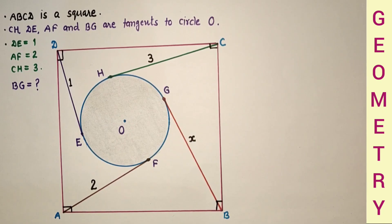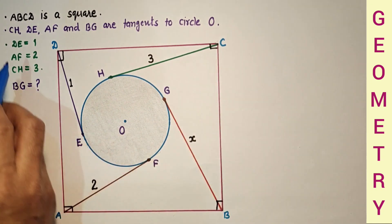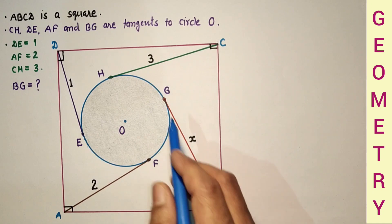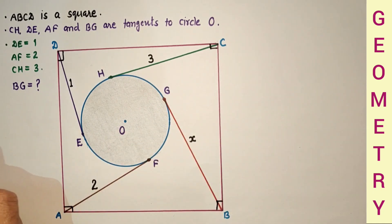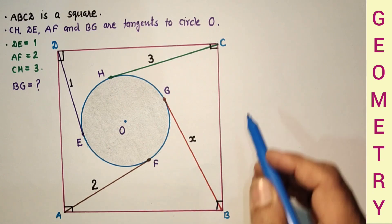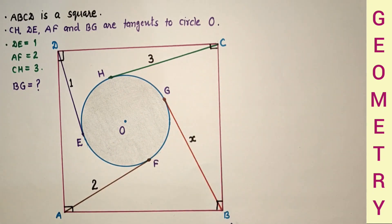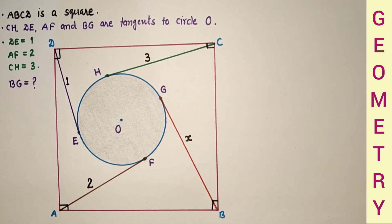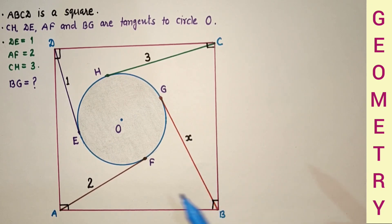Hello everyone, welcome to my channel. Today we will discuss this question. We are given ABCDEJ square, and CH, DE, AF and BG are tangents which touch the circle. The lengths of these three tangents are given: DE is 1 unit, AF is 2 units, CH is 3 units. We have to find the length of the fourth tangent BG. Let us suppose BG is X. We have to determine the value of X. This question looks simple but in fact it is not, so first you can try yourself, then you will see how difficult or easy this question is.